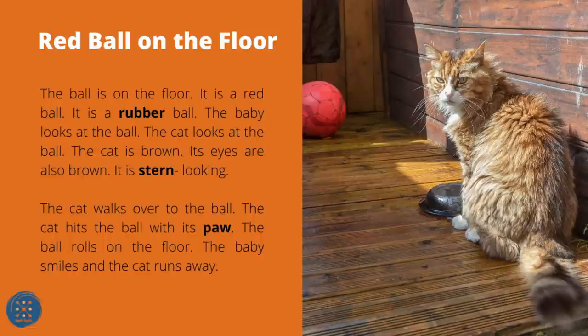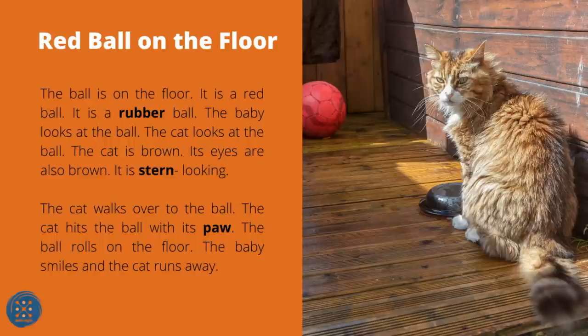Red Ball on the Floor. The ball is on the floor. It is a red ball, a rubber ball. The baby looks at the ball. The cat looks at the ball — the cat is brown, its eyes are also brown, it is stern-looking. The cat walks over to the ball and hits it with its paw. The ball rolls on the floor. The baby smiles and the cat runs away.